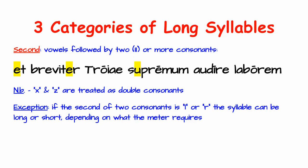A couple of details to bear in mind: X and Z are treated as double consonants, because X is really a K-S sound, and Z was considered to be a D-S sound — so there are two consonant sounds in each. The Romans got this from the Greeks. Those are considered double consonants. Also, if the second consonant of two is an R or an L after certain other consonants, sometimes we can treat that syllable as short — we have a little bit of leeway. They're kind of like wild cards.